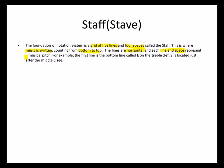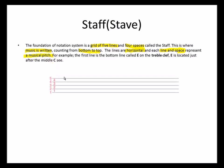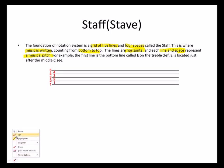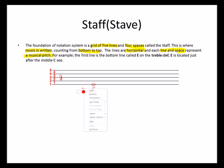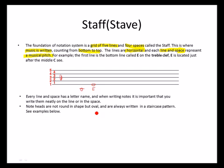Each line or space represents a musical pitch. If we have the treble clef on the staff, the bottom line would be E. Middle C is slightly below this line, so E is slightly above middle C. We have given this line the letter name E, so every line and space has a letter name.